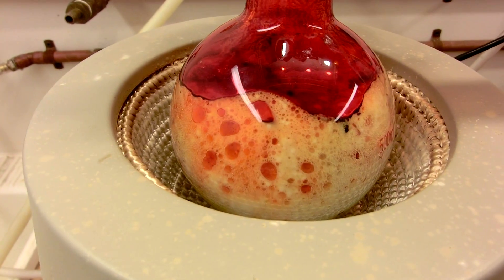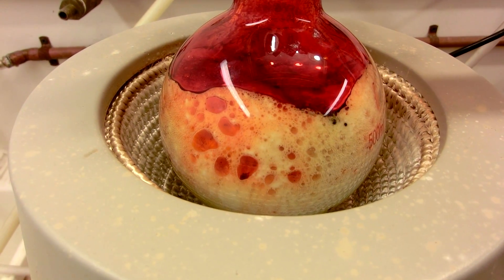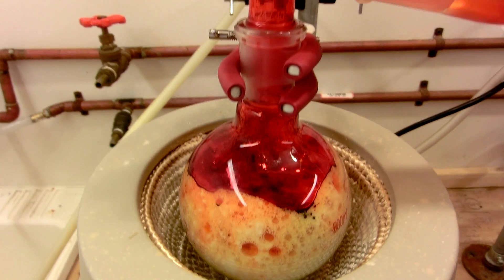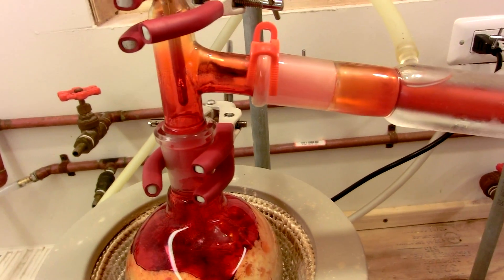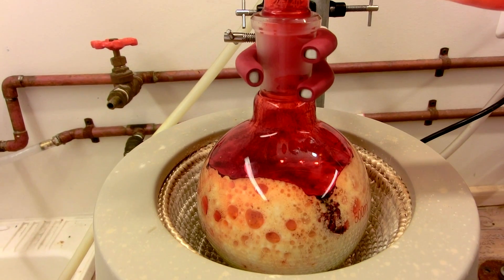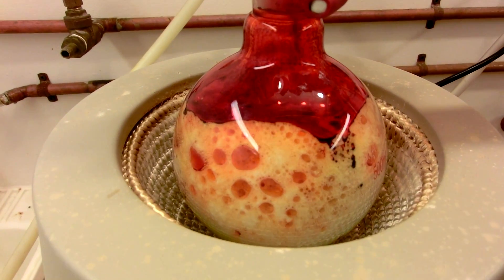As the reaction heats up, it will begin to foam slightly, and a blood red liquid will begin to condense in the condenser and drop into the receiver. This is the chromal chloride. Control the heating to control the foam.